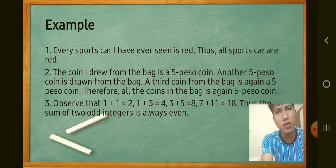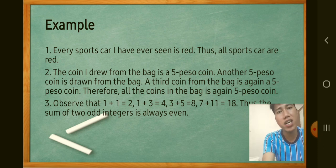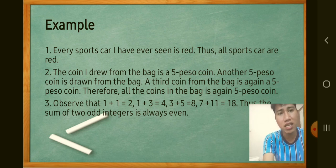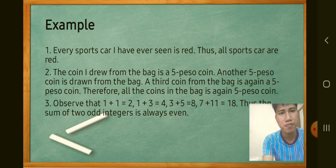Observe: 1 + 1 = 2, 1 + 3 = 4, 3 + 5 = 8, 7 + 11 = 18. Thus, the sum of two odd integers is always even. In number pattern problems, we use inductive reasoning because we give examples first and find a pattern. Here, 1 and 1 are odd integers and their sum is even, leading to the general conclusion that the sum of any two odd integers is always even.